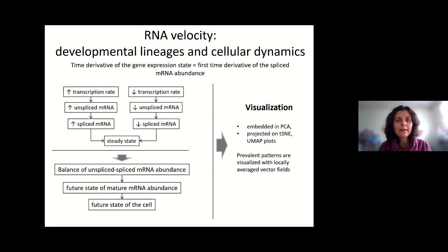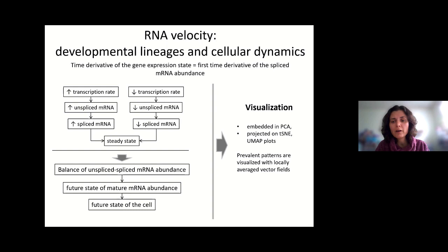Once RNA velocity is calculated, the velocity is a vector, so we have a vector field. We can visualize it by projecting onto low-dimensional plots such as tSNE or UMAP. Since we have many cells, we don't plot each vector separately — instead we use locally averaged vector fields to reveal the prevalent patterns.